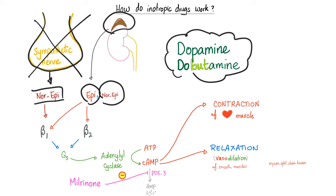That final enzyme is called phenylethanolamine N-methyltransferase. The sympathetic nerve does not have it, but the adrenal medulla does — and that's why the adrenal medulla can transform norepinephrine into epinephrine. That's why the adrenal medulla secretes both norepinephrine and epinephrine, but the sympathetic nerve ending can only secrete norepinephrine.